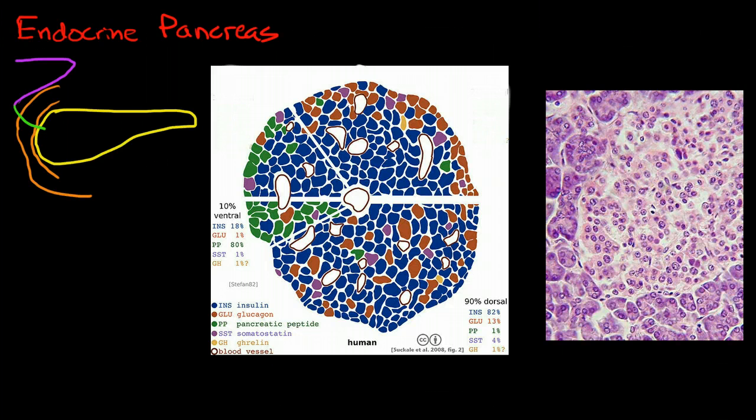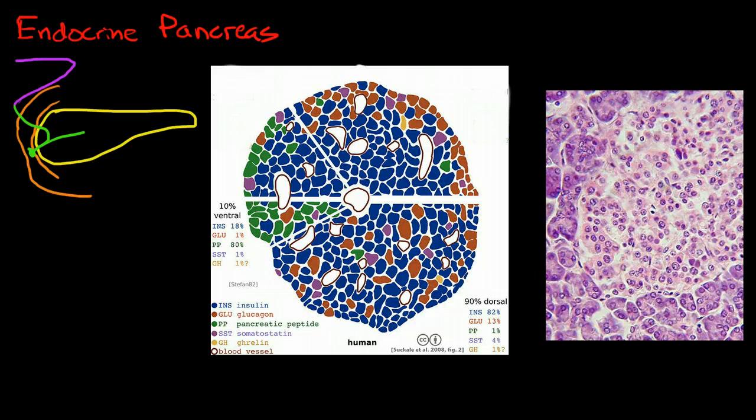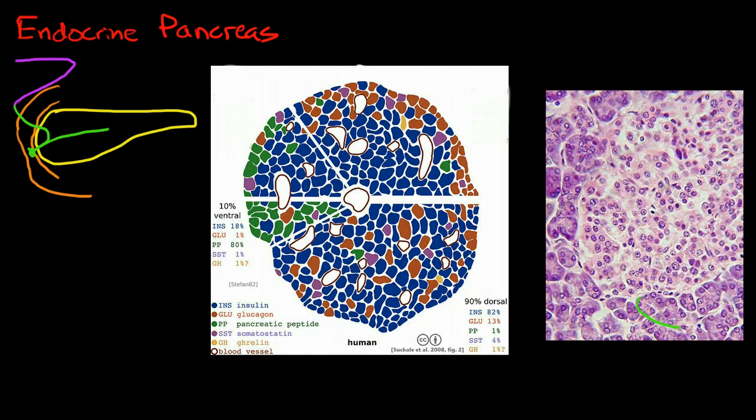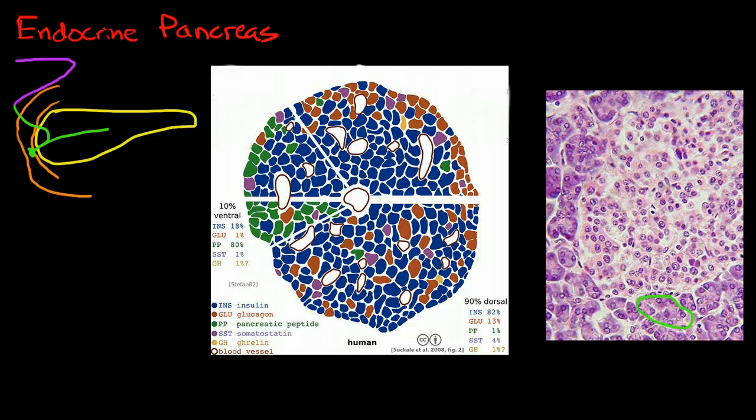And it drains with the bile via the common bile duct through the pancreatic duct into the small intestines. Now, one of the functions of the pancreas that we're going to talk about more when we get to the GI section is this exocrine function, where the pancreas is dumping large amounts of bicarbonate and enzymes to aid digestion into the small bowel via this pancreatic duct.